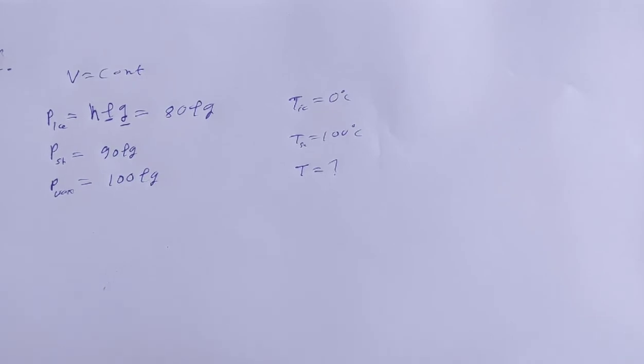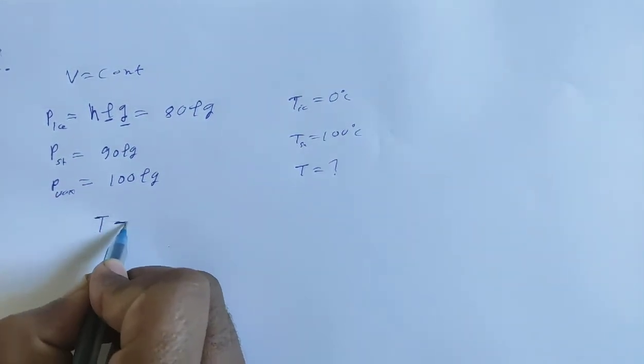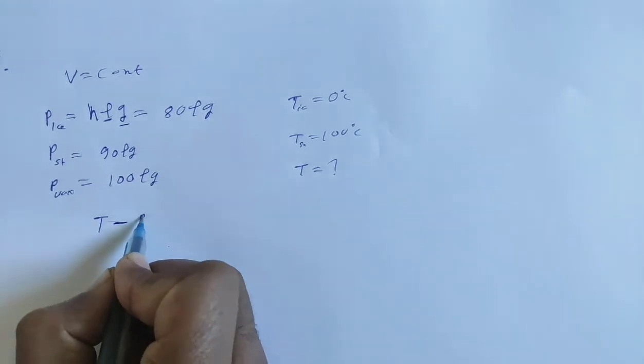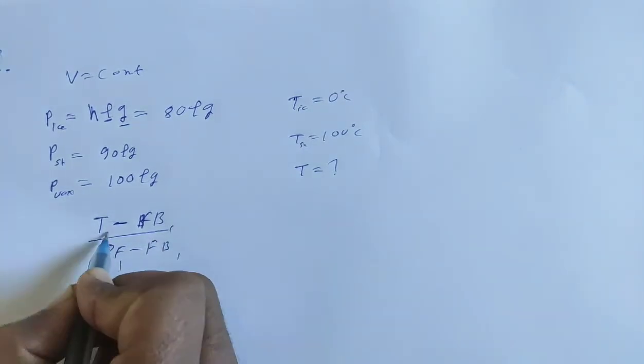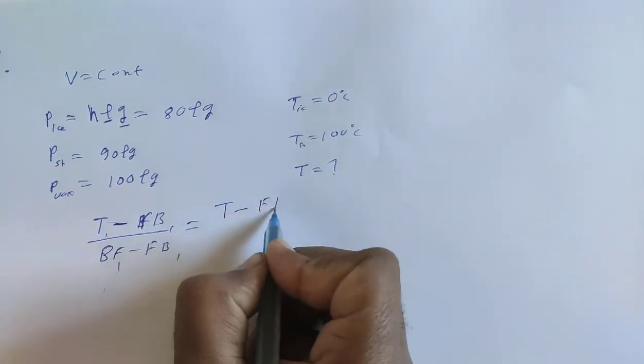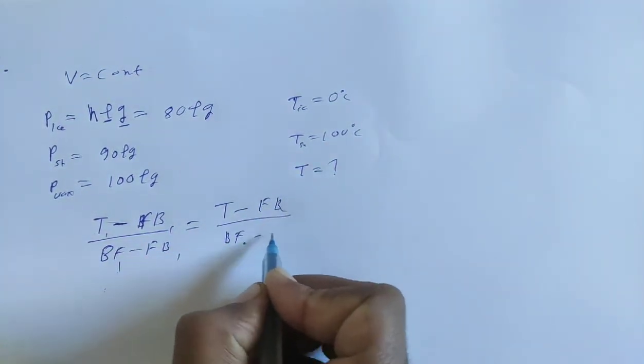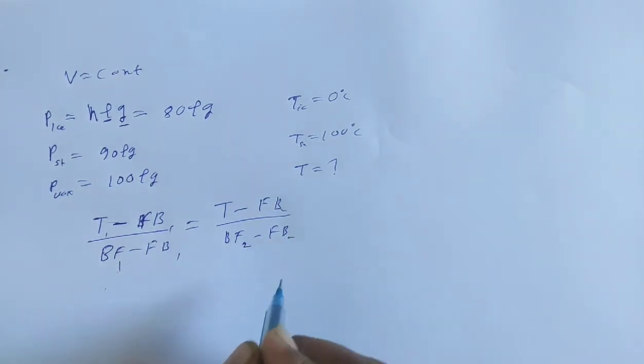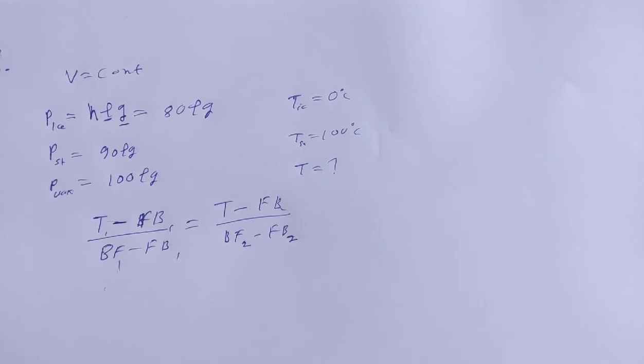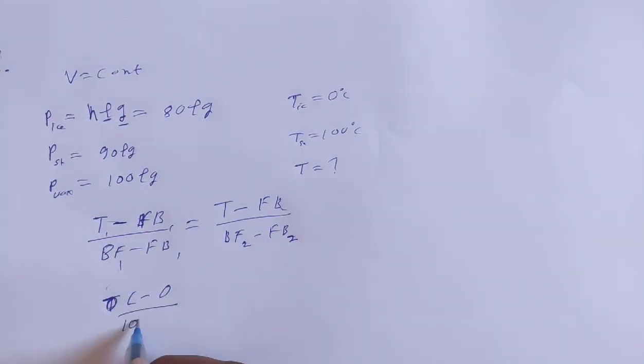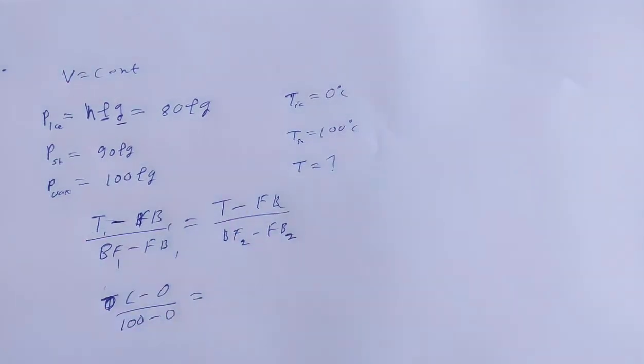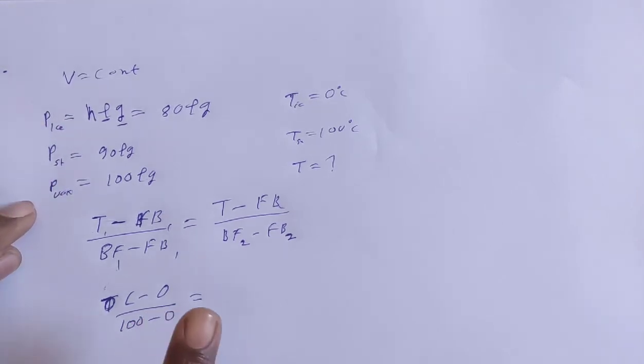Okay, now how to solve this problem? We have learned that when relating two temperature scales, we use: T minus freezing point of first scale divided by boiling point of first scale minus freezing point of first scale equals T minus freezing point of second scale divided by boiling point of second scale minus freezing point of second scale. Here we have to use the Celsius scale.